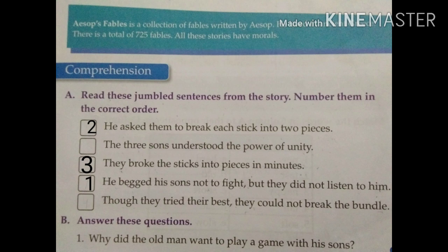The fourth sentence according to the story will be: though they tried their best they could not break the bundle. The fifth sentence will be: the three sons understood the power of unity. So write number five here.